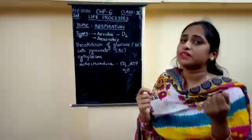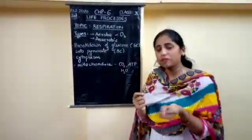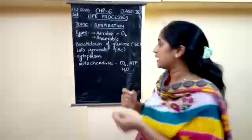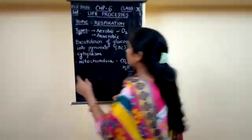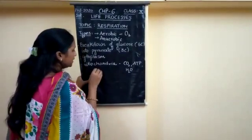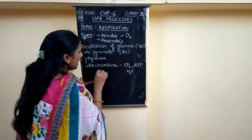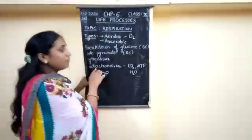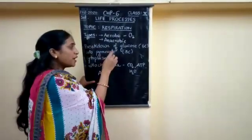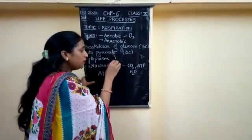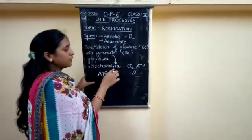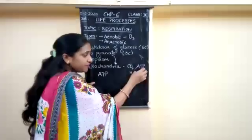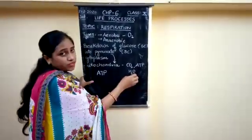Whatever biochemical reactions take place inside the cell will be utilizing ATP. In the mitochondria, the second step is the breakdown of the pyruvate molecule, releasing carbon dioxide, ATP, and water.